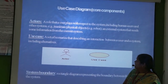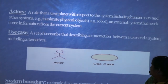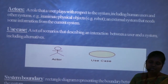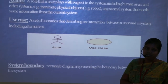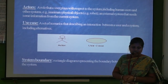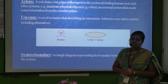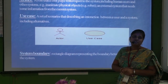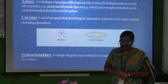An actor is a role that is played with respect to the system. It includes humans, systems, or a database. For example, it may be a database, cashier, account, teacher, or anything — they are all called actors. There are two types of actors: one is the primary actor and the second is the supporting actor.